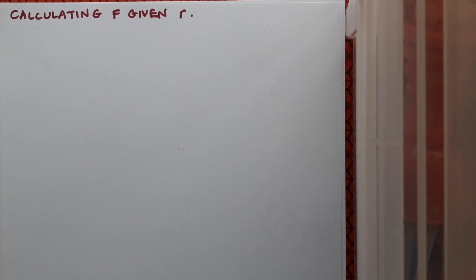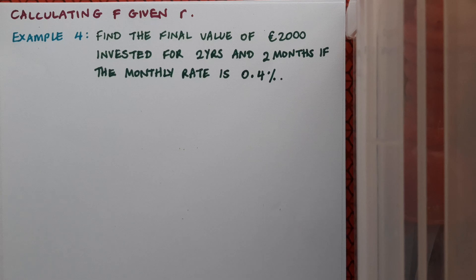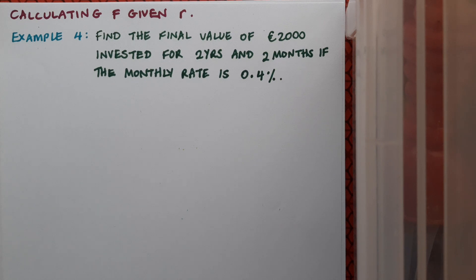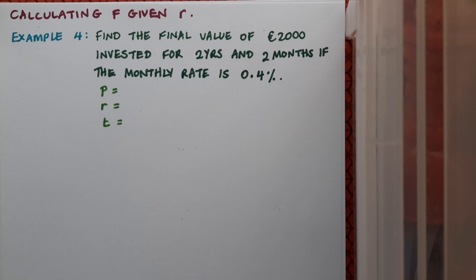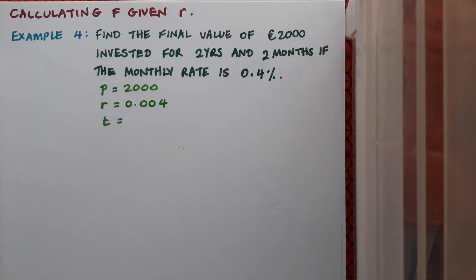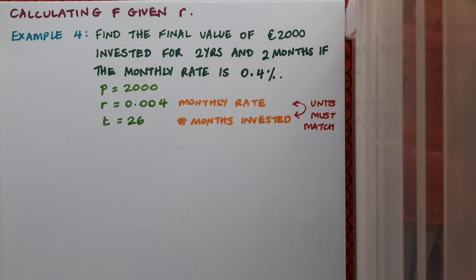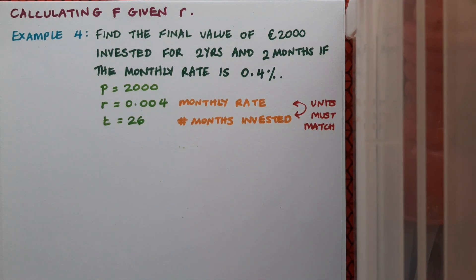Finally for this video we're going to look at calculating F when we're given r instead of i. So here's an example. We've got to find the final value of €2000 invested for two years and two months if the monthly rate is 0.4%. Now I'm actually quite happy to work with the monthly rate. I don't need to go changing that but I do need to make sure that the rate is matching the time in terms of units and I mentioned this earlier in the video. So I'm going to start by noting the values that I have in the question. P is 2000. The monthly rate is 4%, writing on the decimal is 0.004. And now time. Okay so my rate is a monthly rate so my time has to be months as well. So I have to just convert two years and two months into months. So I've got a monthly rate and the number of months invested. And remember these units must match before I can proceed with the formula. So now I'll make a note of my formula for final value.